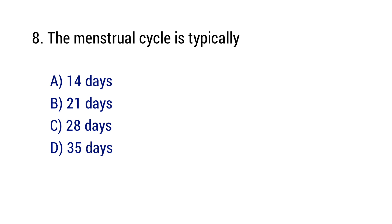Question number 8. The menstrual cycle is typically? The right answer is option C: 28 days.